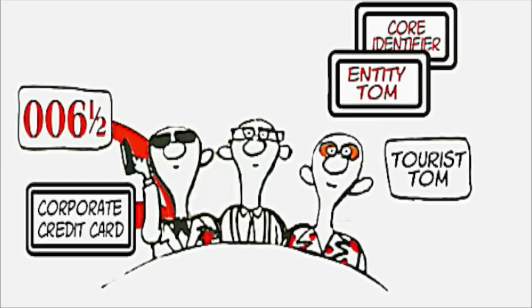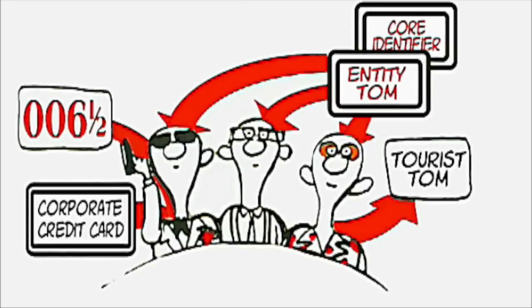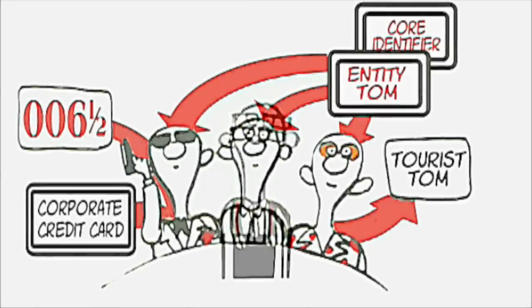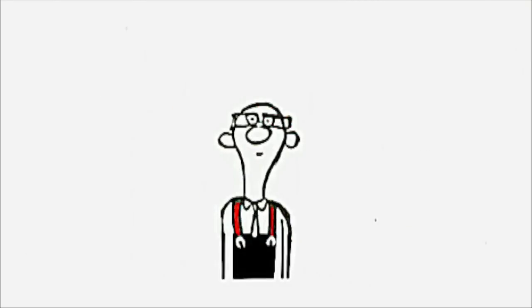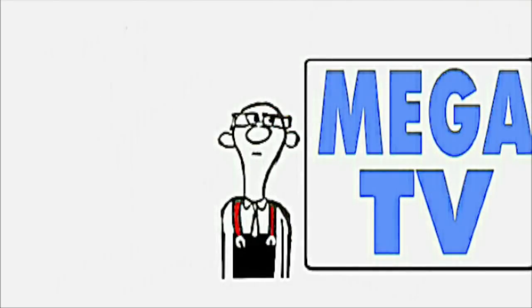Tom is using a core identifier linked to his multiple personas. This allows him to assert just the parts he needs, with only those parties having access to the information they need. So let's say Tom wants to buy a large-screen TV.